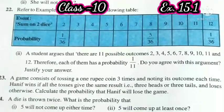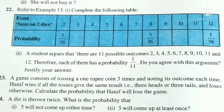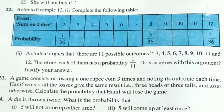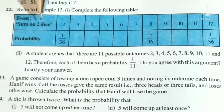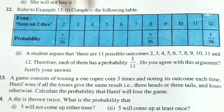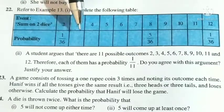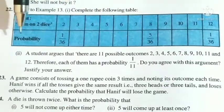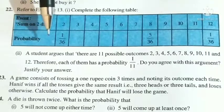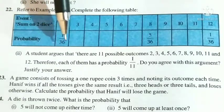Refer to example 13. First, complete the following table. A table is given that we need to complete — showing the probability of getting sums 2, 3, 4, 5, 6 and so on when two dice are thrown. Second part: a student argues that there are 11 possible outcomes — 2, 3, 4, 5, 6, 7, 8, 9, 10, 11, and 12 — therefore each has a probability of 1/11. Do you agree? Justify your answer.